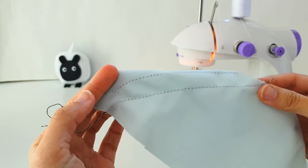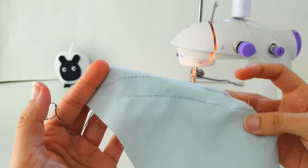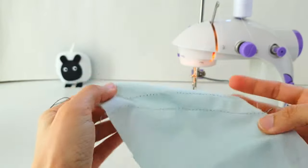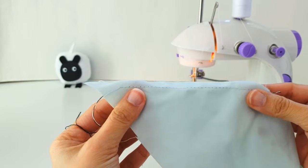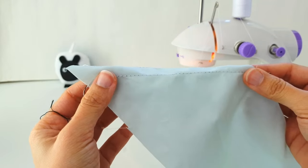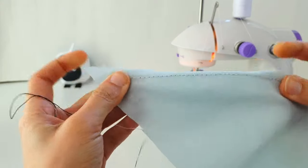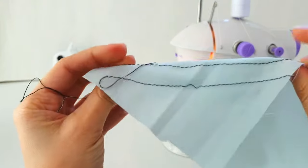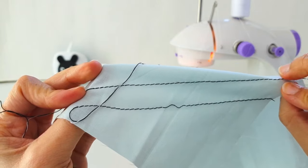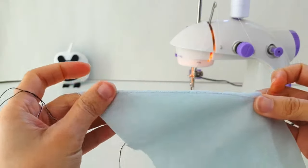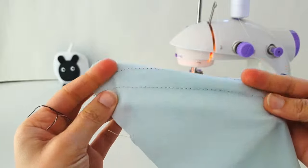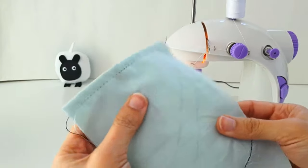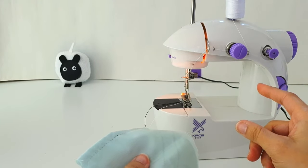So this second stitch line is looking much better than the first one. Can you see? There's no puckering. Let's try pulling on the fabric again. And hey, look, nothing broke, which means the tension is now balanced, because the top thread and the bottom thread have both come through evenly. So that is one way to quickly adjust the tension on your mini sewing machine.